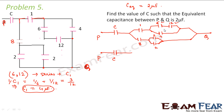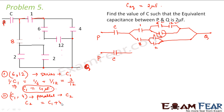Now this C1 is in parallel with 4. So the next step: C1 and 4 are in parallel combination. Let us call their equivalent capacitance as C2. So C2 will be equal to C1 plus 4. C1 is already 4, so 4 plus 4 gives 8 microfarads. So C2 — meaning the total combination of the three capacitors C, 12, and 4 — the entire capacitance is C2, that is 8 microfarads.